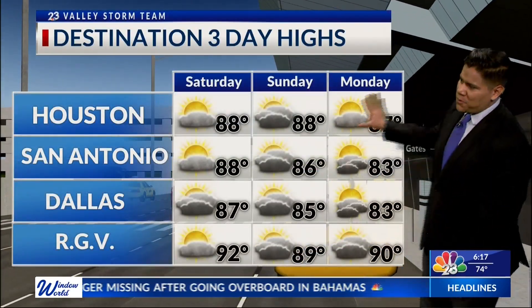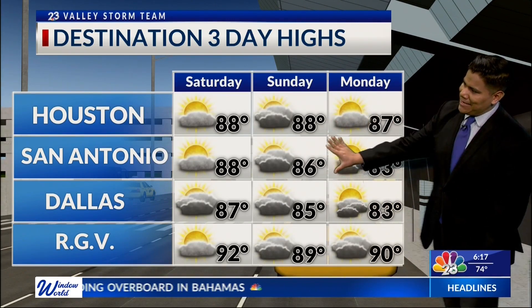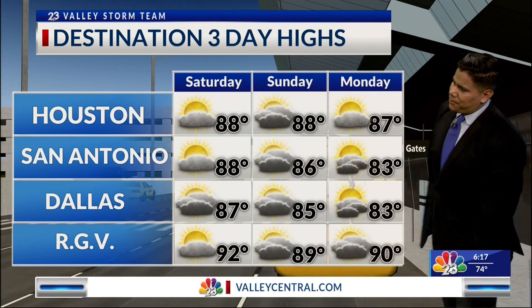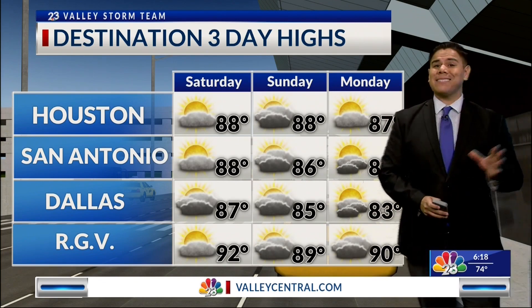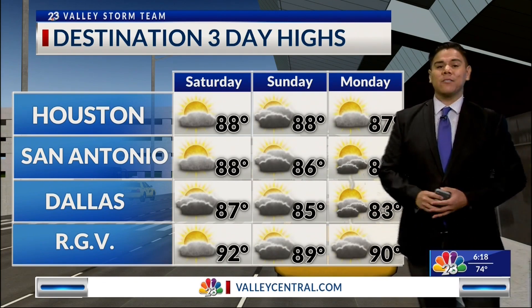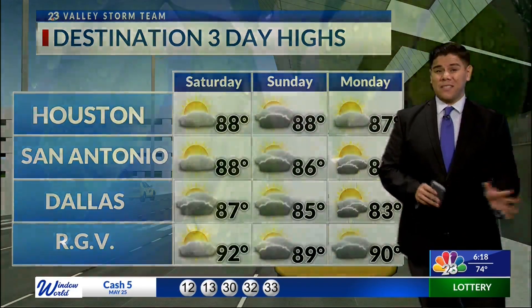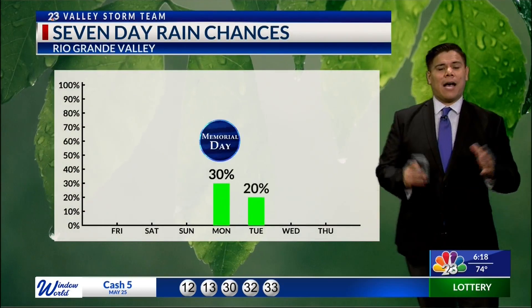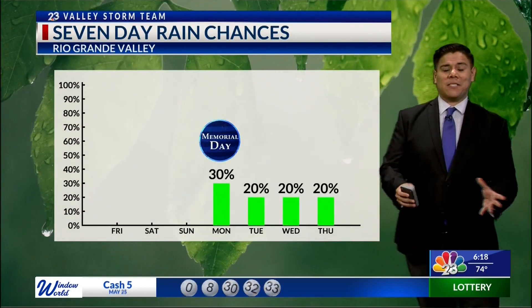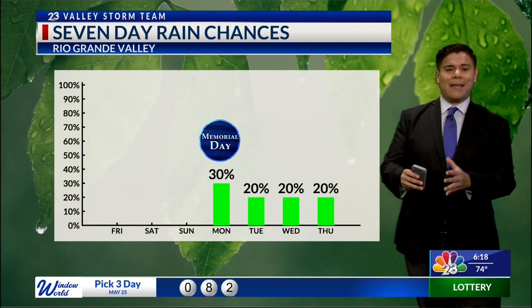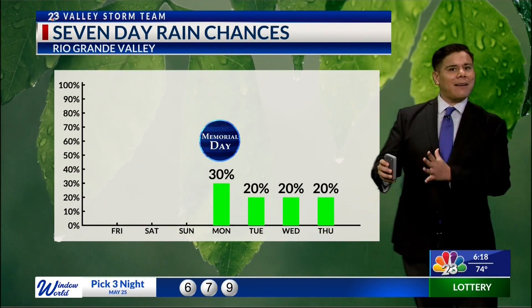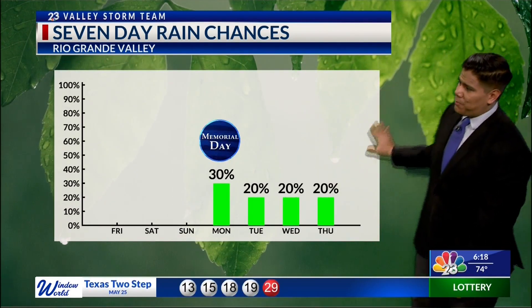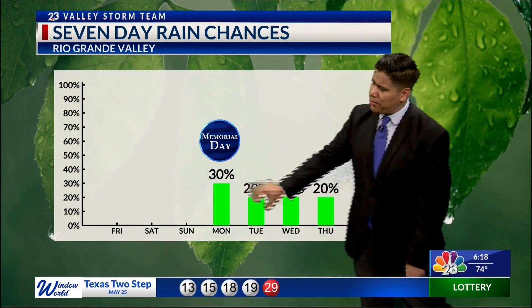If you are leaving the valley and heading elsewhere across the Lone Star State, we're going to see those temps in the 80s and 90s across the area. However, Monday looks a little bit on the sketchy side. We might see some rain chances return to the valley as well as the southern half of the state, as this high pressure system that's been keeping everything dry and sunny for the past few days is going to be moving out of the picture. Looking at that seven-day rain chance, Memorial Day has a 30% chance of scattered showers.